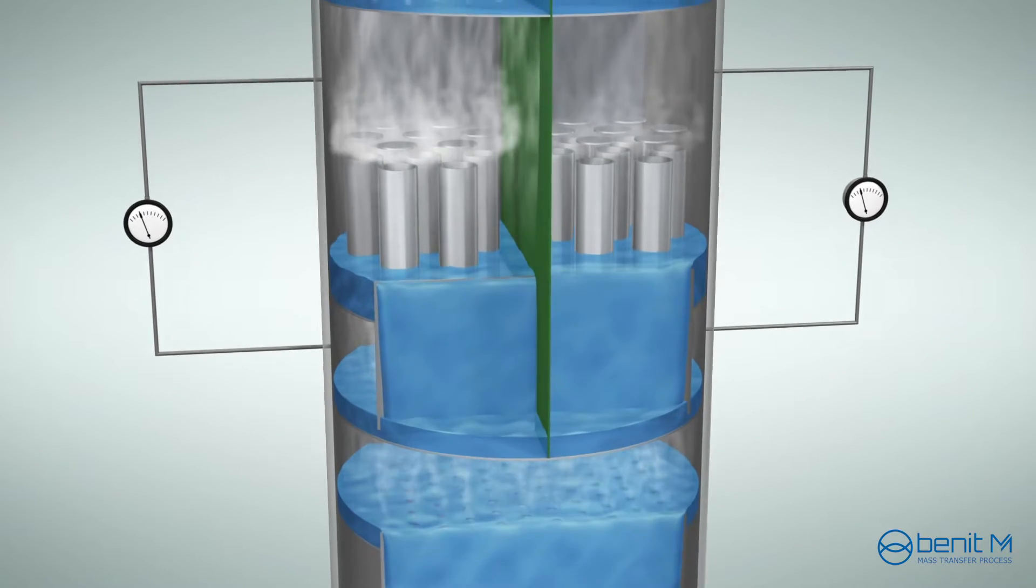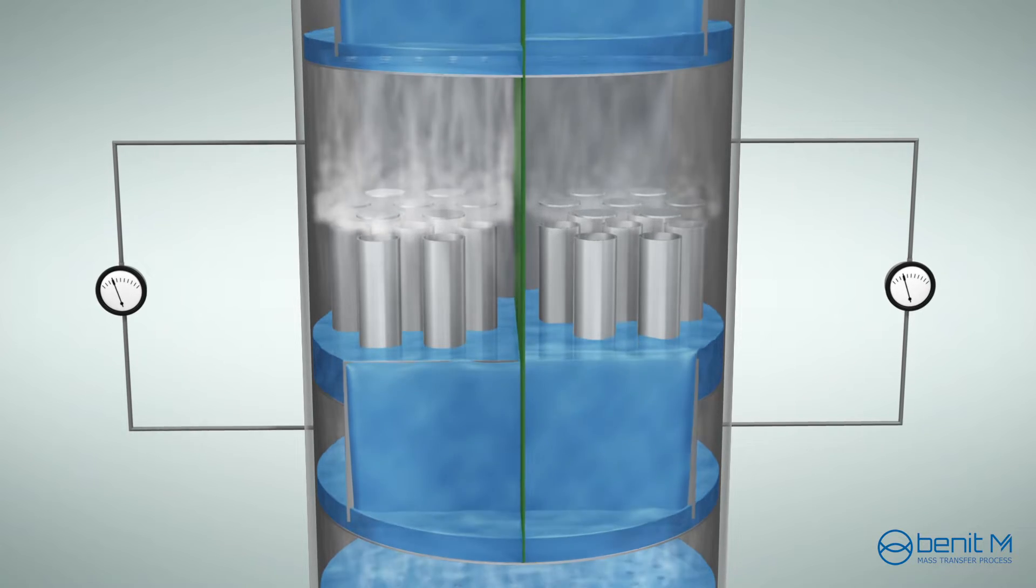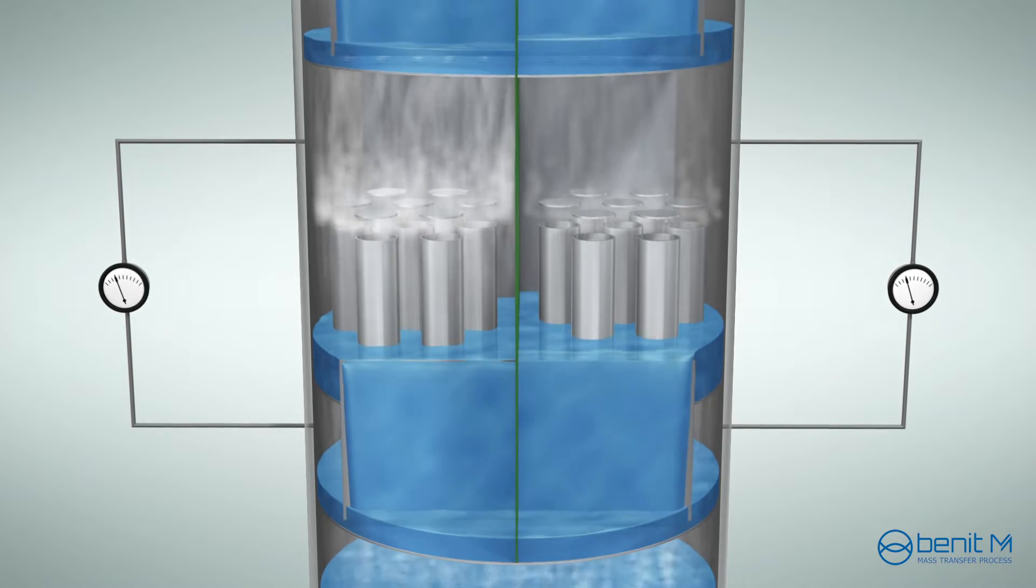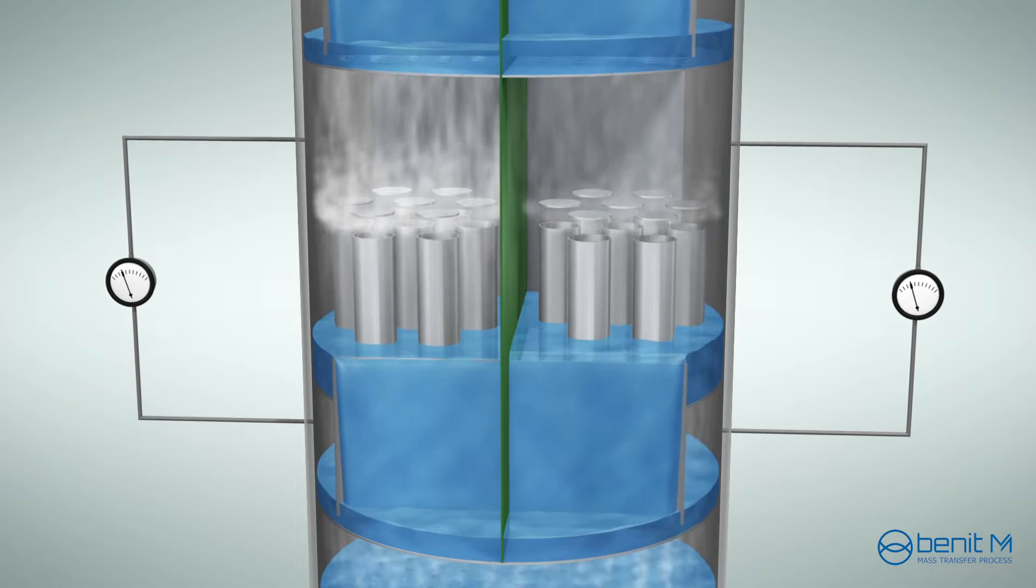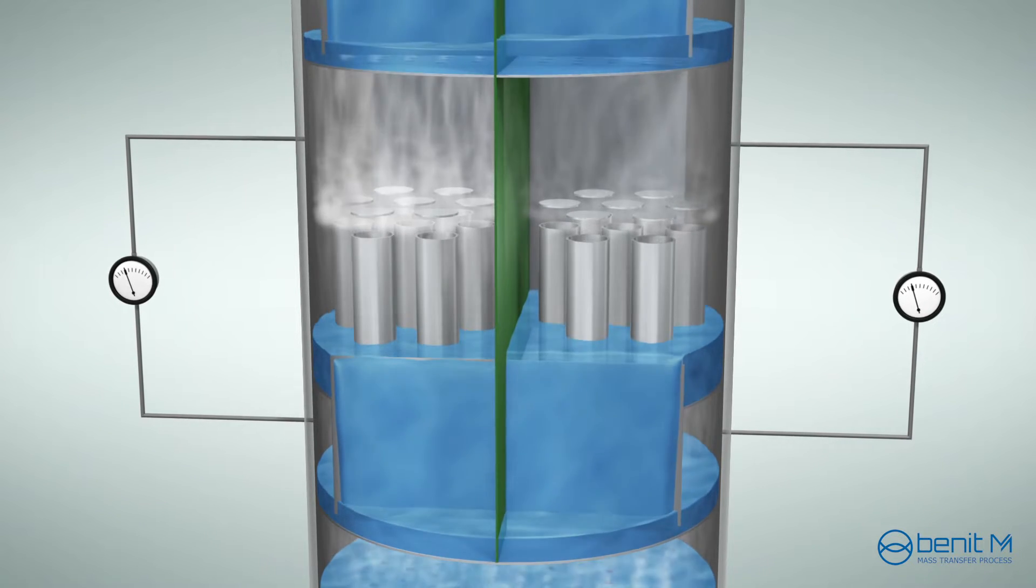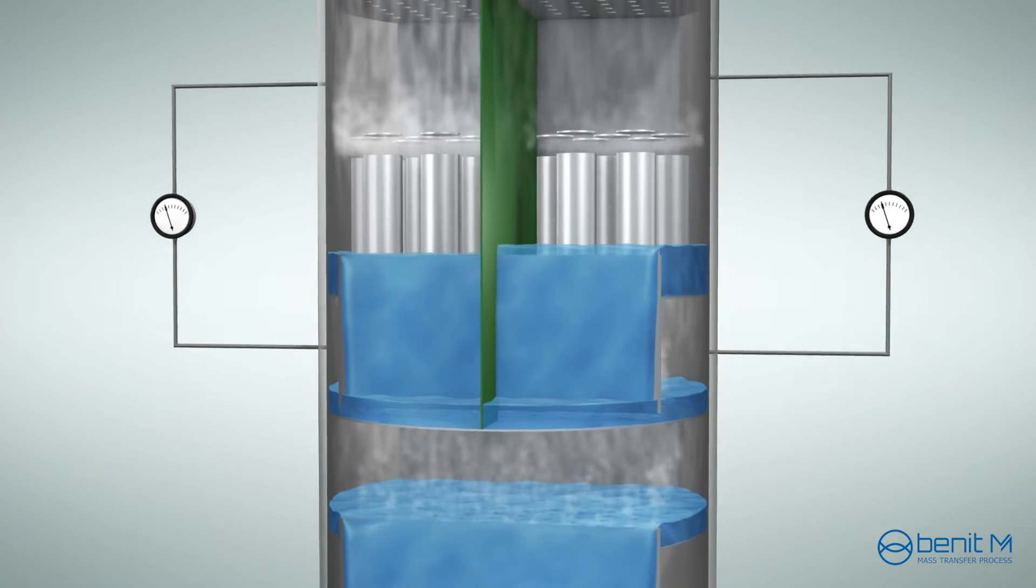Most of existing vapor splitters are designed to have a fixed open area for vapor flow. Therefore, the vapor split ratio cannot be regulated with respect to changes of liquid split ratio. The vapor split ratio responds in the opposite way to the liquid split ratio change.